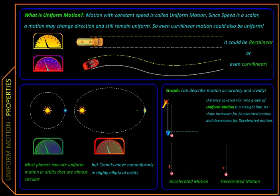Here we are going to learn about uniform and non-uniform motion. Whether a motion is uniform or not uniform depends upon the speed. If speed is constant, the motion is uniform, or else it is non-uniform motion.